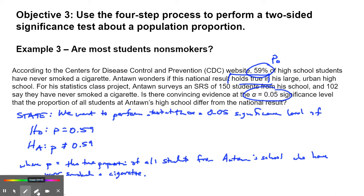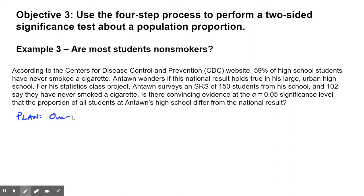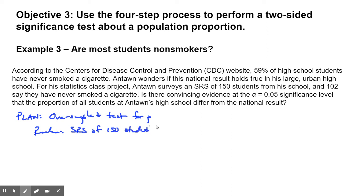Next, the plan part. When we're doing a test for a proportion, it's always a one-sample Z test for P. Random condition: SRS of 150 students from his school. That 'from his school' is important because that's why we include 'from Anton's school' in the explanation of our parameter — we're looking at the kids from his school. So that condition is met.